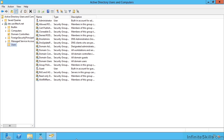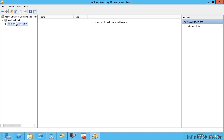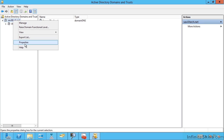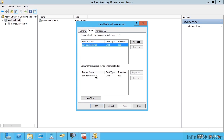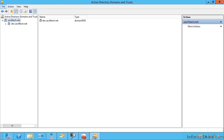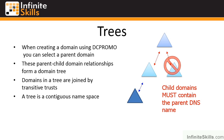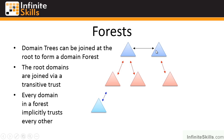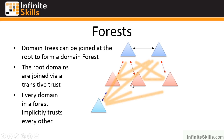It shares the existing site configuration from the existing domains, because that is a forest-wide configuration. Looking at the trust relationships, I can now see a trust of type 'child' between the parent and the child domain — this is a transitive Kerberos trust. So that's trees — a contiguous namespace with dev.saviltech.net. A forest is a Kerberos transitive trust between two trees, which can have different namespaces. Because it's a Kerberos trust, every single domain in the entire forest trusts every other domain, so any user in any domain can be given access to any resource in any domain.